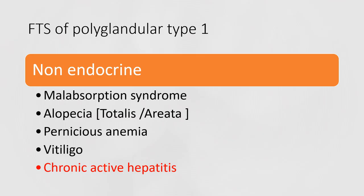Still on polyglandular type 1, the non-endocrine features will include malabsorption syndrome, alopecia totalis or alopecia areata, pernicious anemia, vitiligo, and chronic active hepatitis.